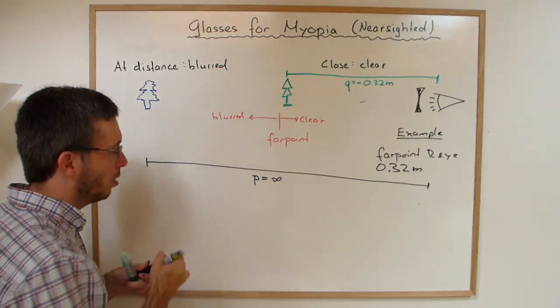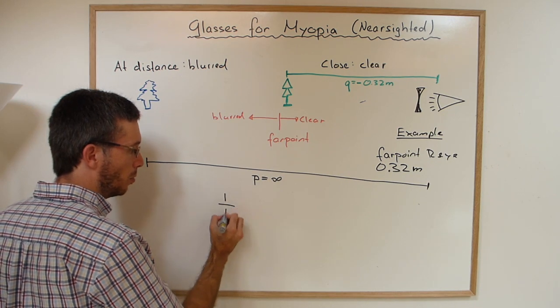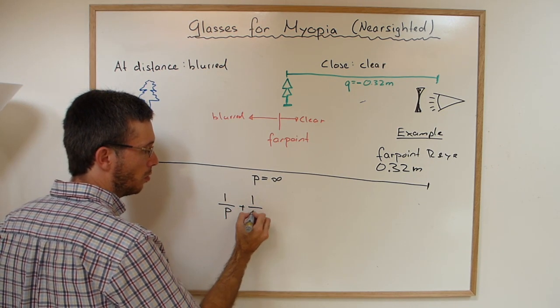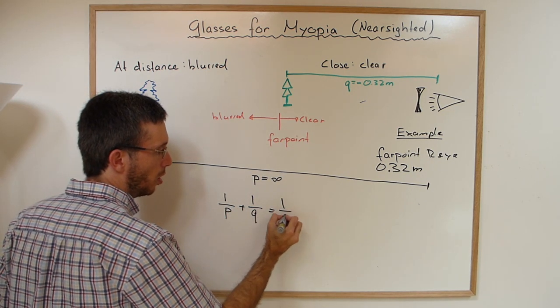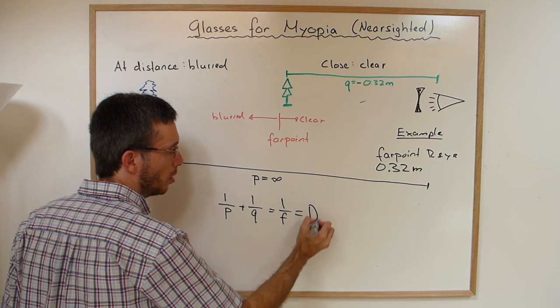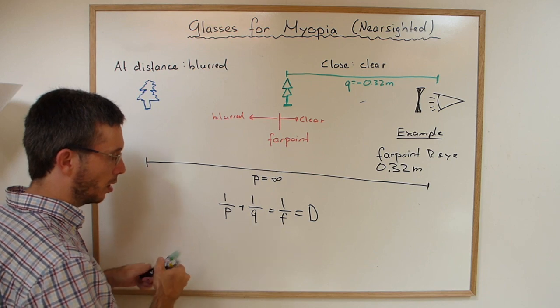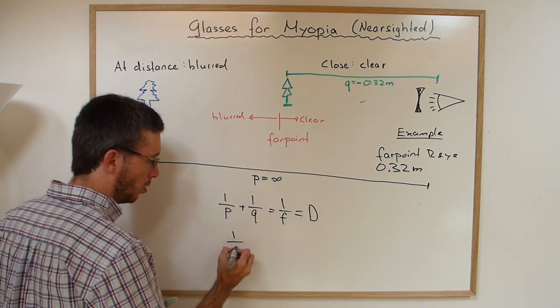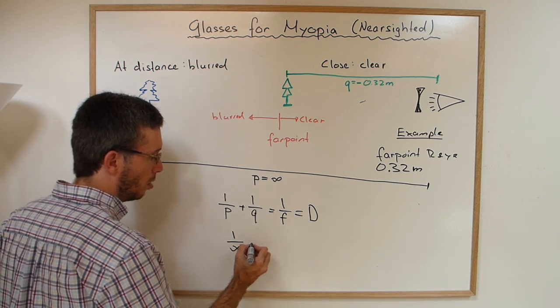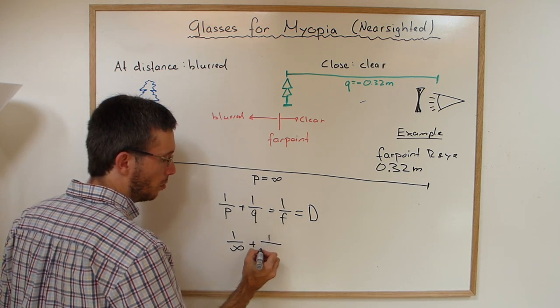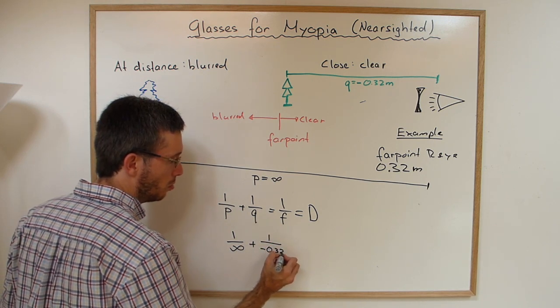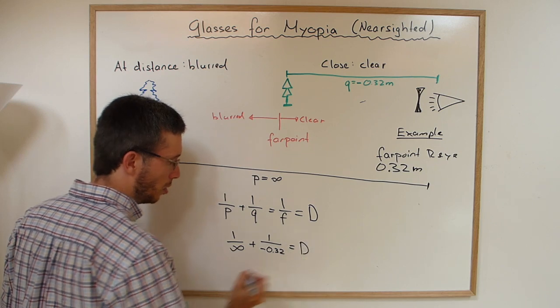So if I do my thin lens equation, 1 over p plus 1 over q is 1 over f, or is equal to the diopters, the power of my lens. Then I would get 1 over infinity plus 1 over minus 0.32 is my diopters.